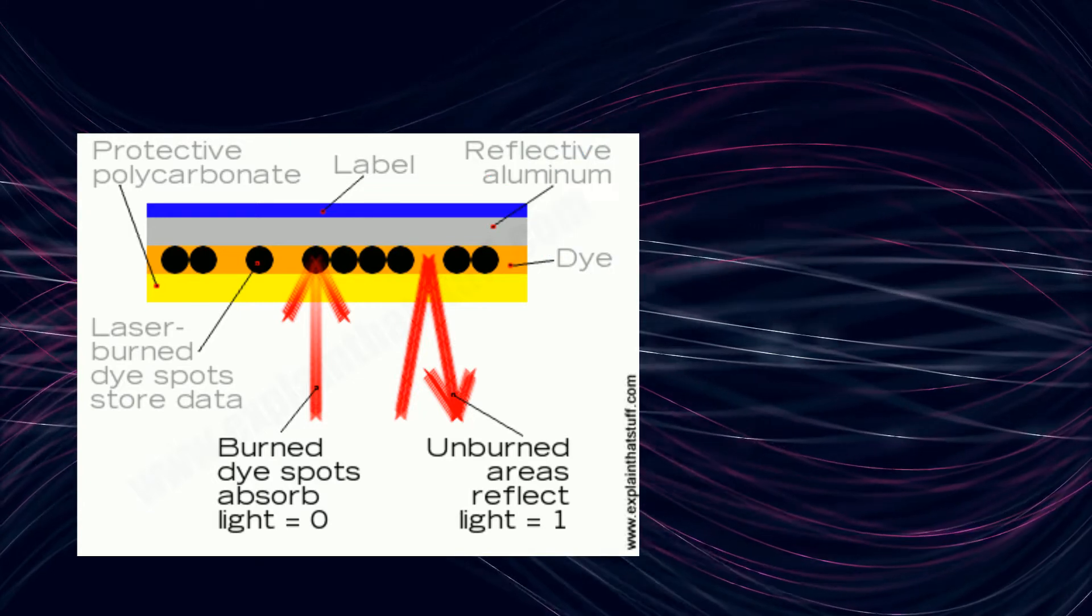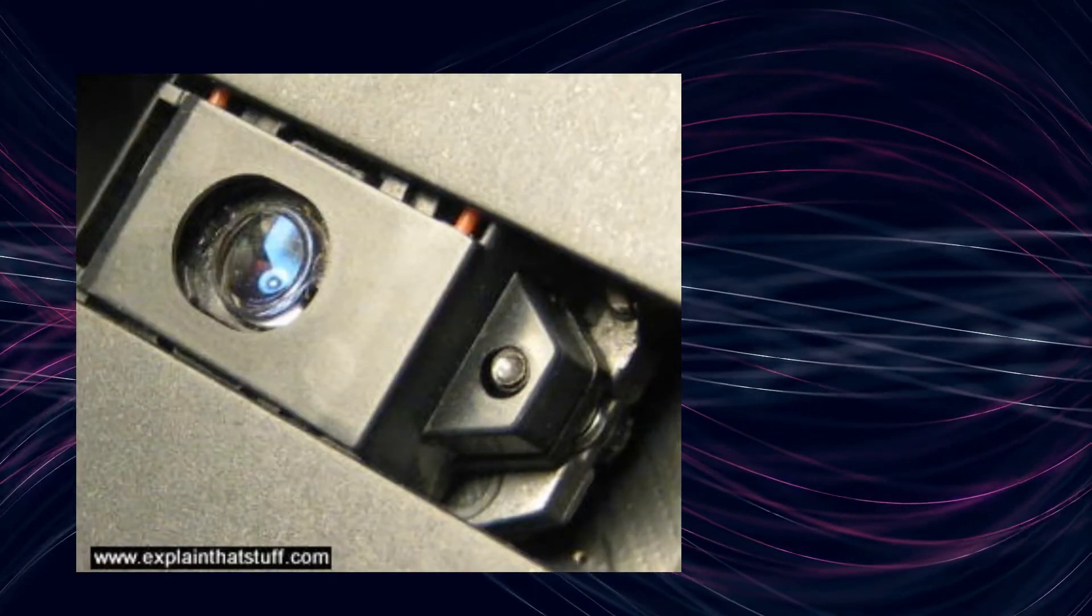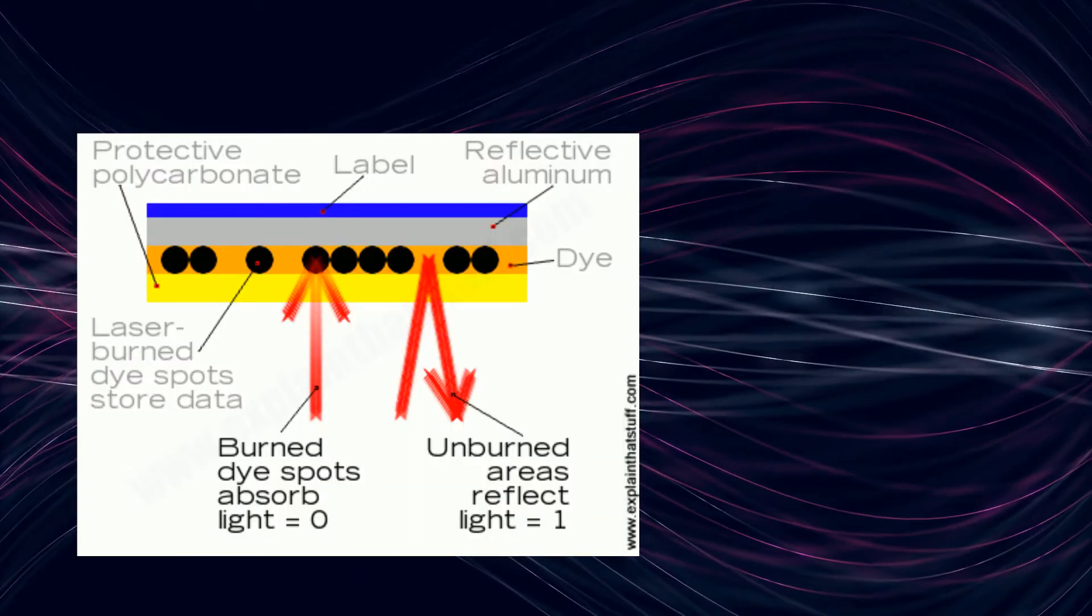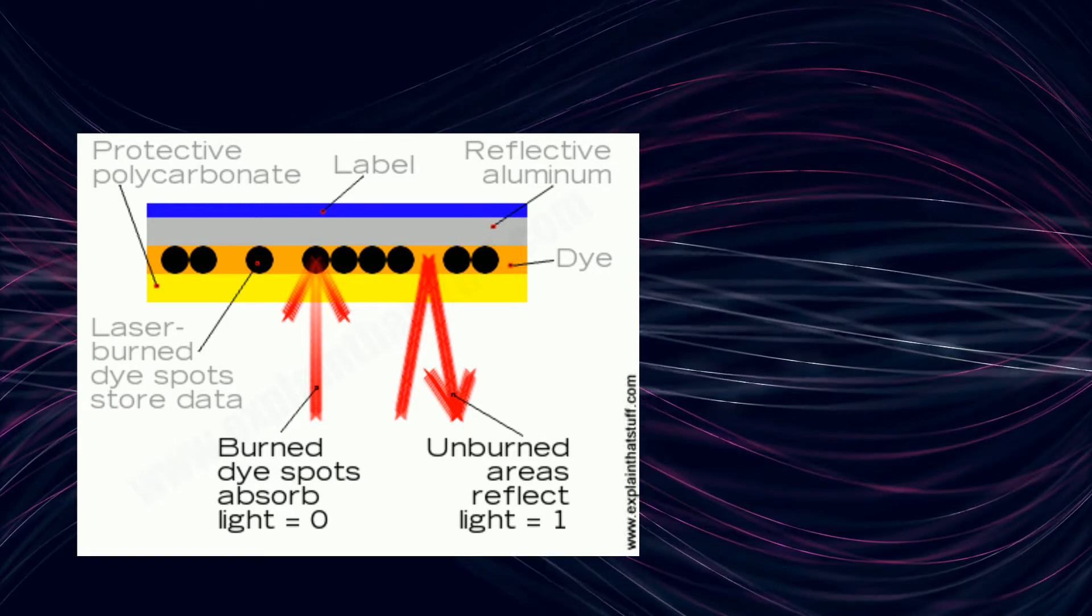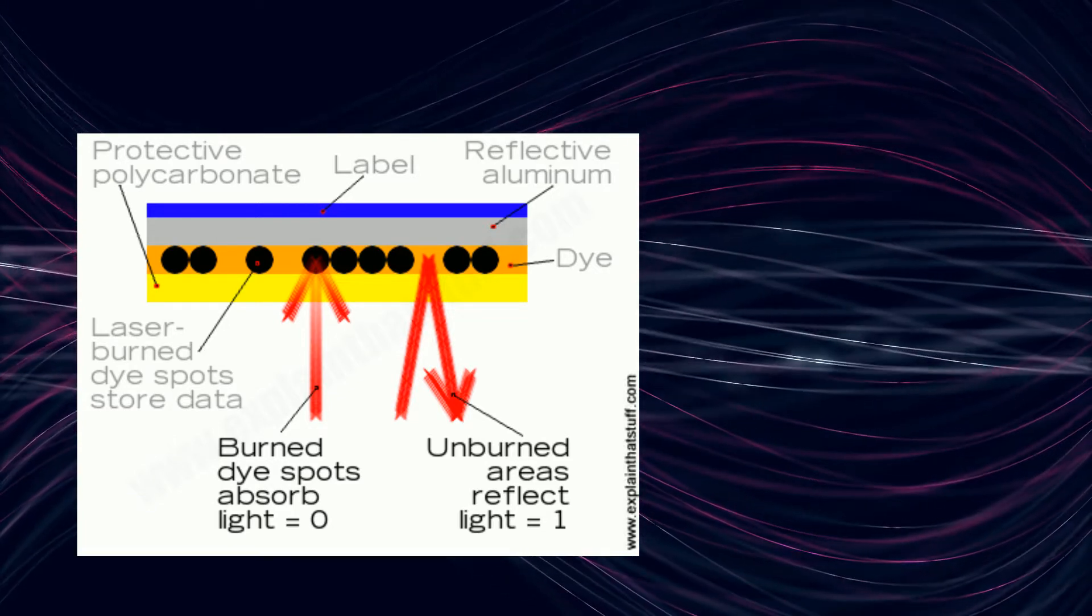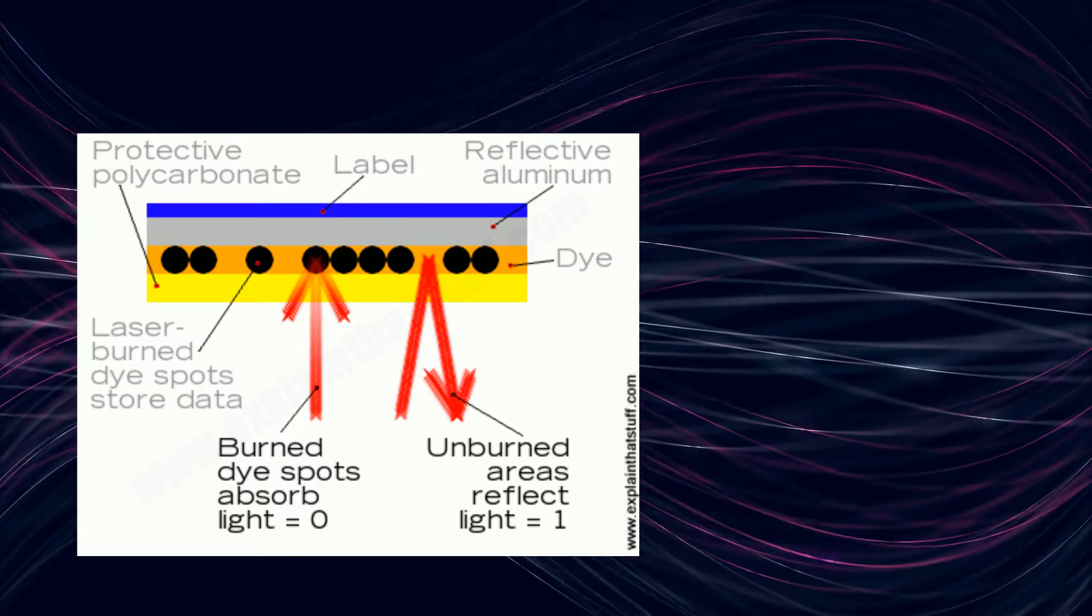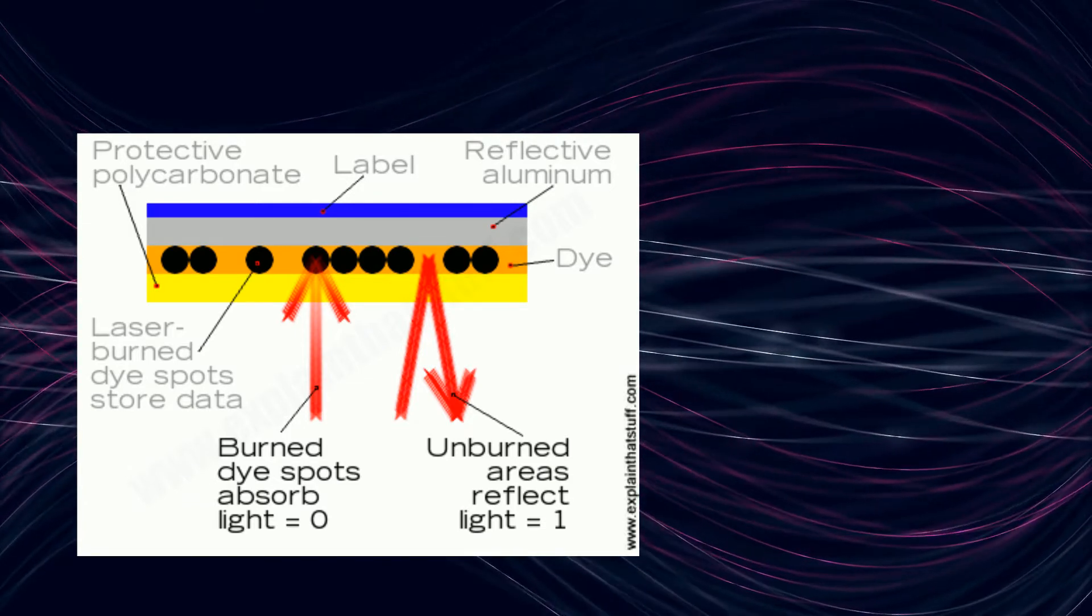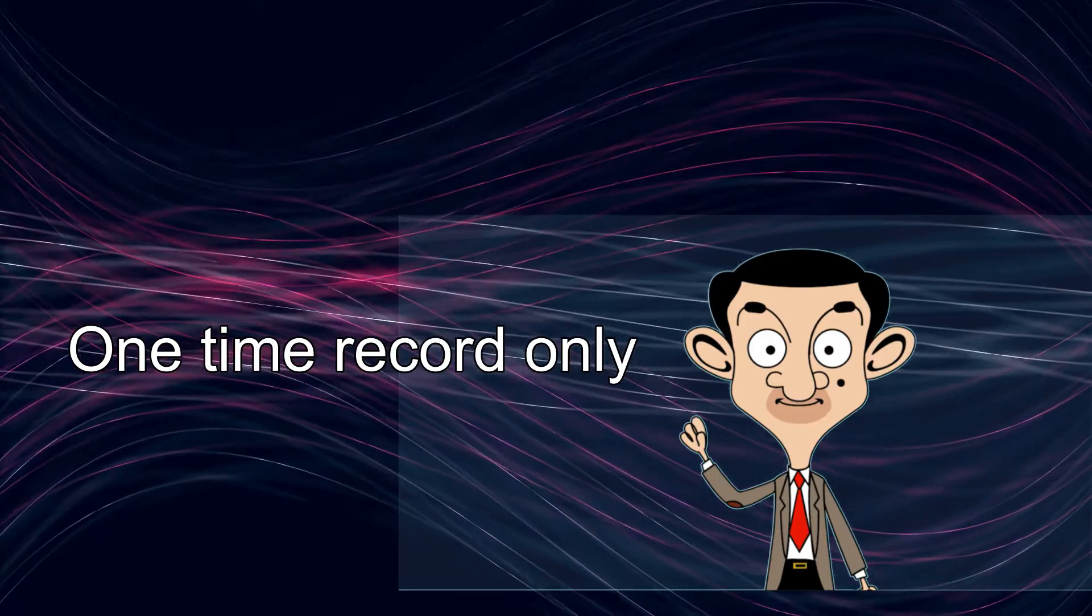Inside it has an aluminum layer and it has a dye. So when it has a dye, it has a high power laser. This means that it combusts with oxygen, so it becomes a black spot which is represented by zero, and the surface that reflects light is represented by one.